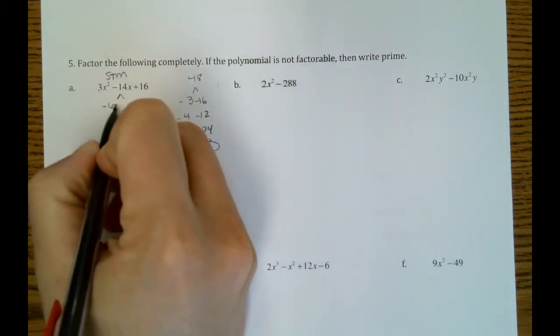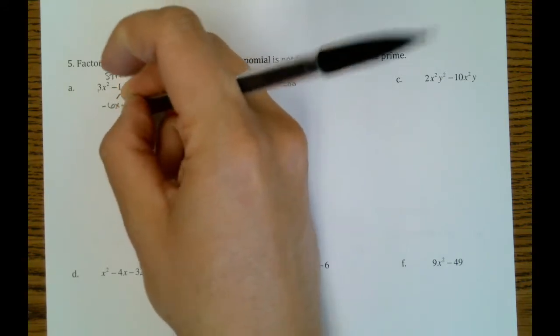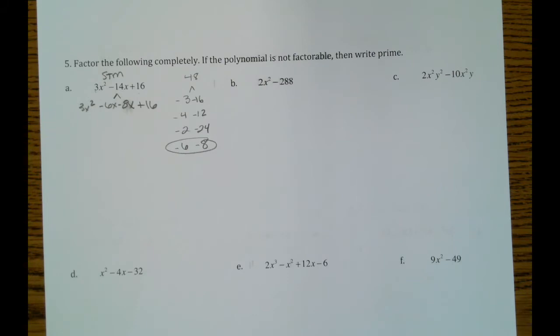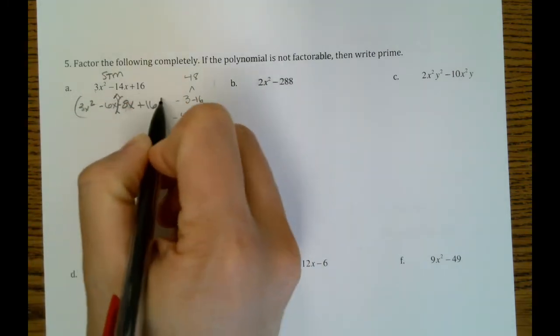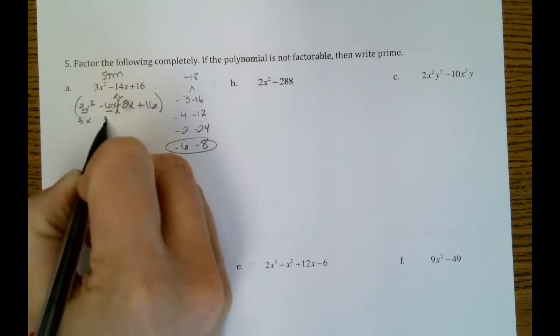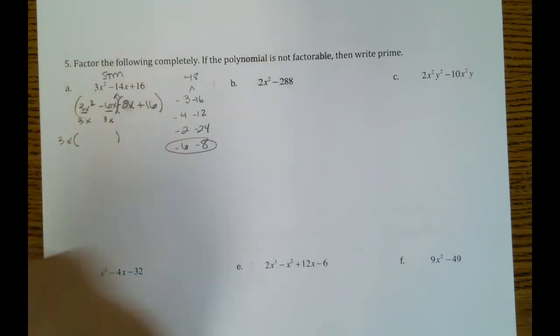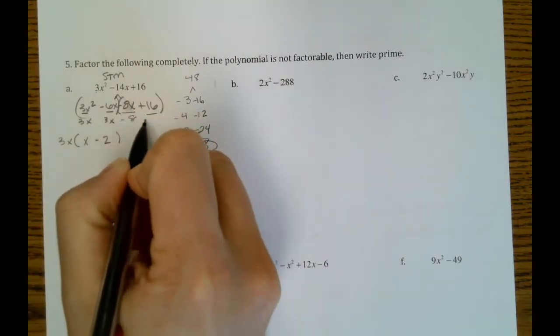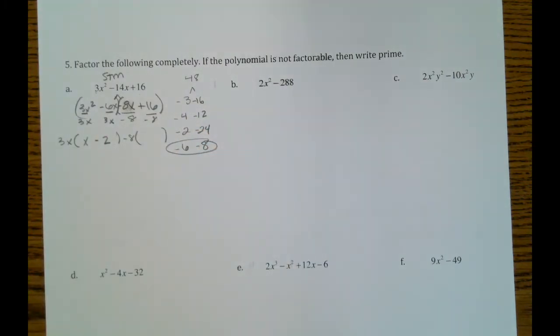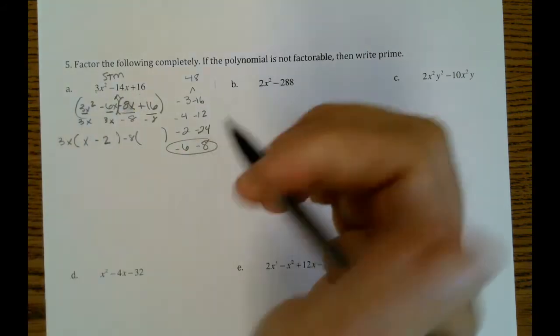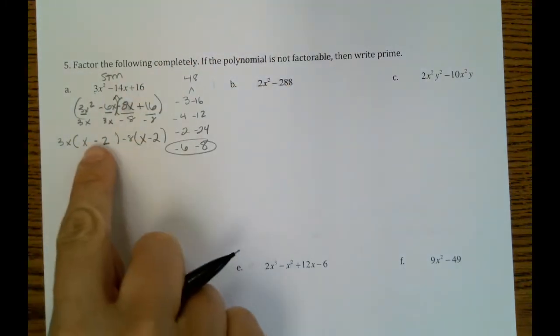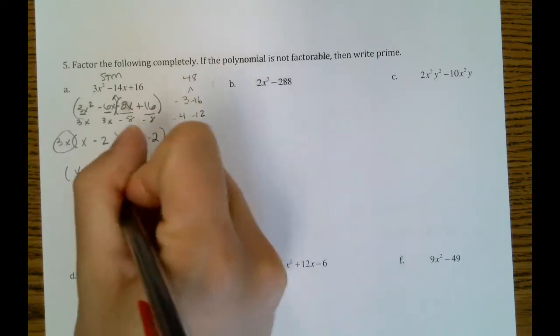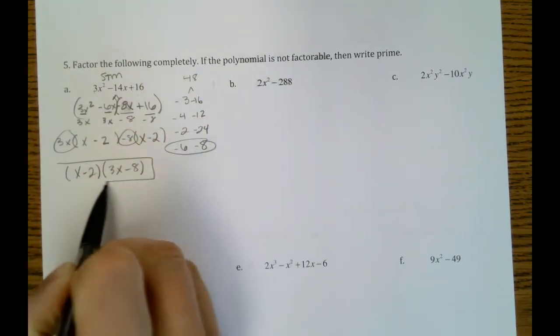So I'm going to split our middle term into negative 6x minus 8x. We'll keep our positive 16 at the end and our 3x squared at the front. And from here it's just grouping. We can divide out a 3x from our first set. So we're left with x minus 2. Once we divide, we'll divide out a negative 8 from our second set. And we know that we want it to be negative because this parenthesis starts with a negative. So we want to get that out of there. We're left with x minus 2. So we want our parenthesis to be the same and they are. So that's one factor. The other factor comes from our GCFs. 3x minus 8. We'll put those together and that's our final answer.